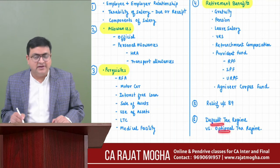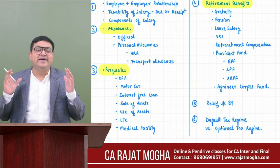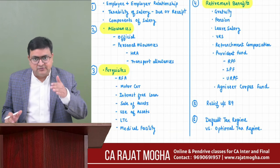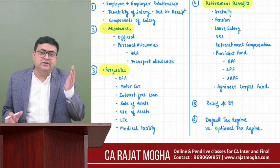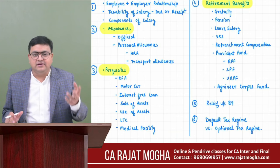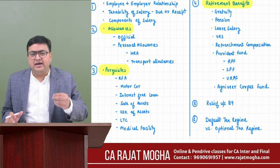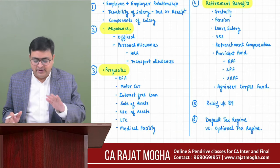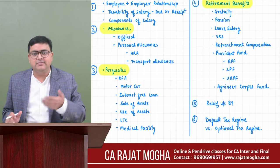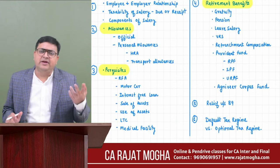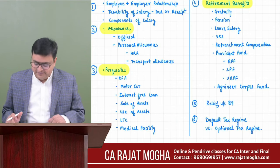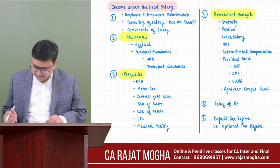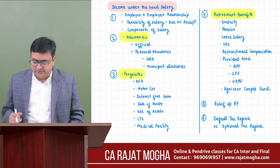You should be well-versed with what items are taxable under the default tax regime and what items are exempt under the default and optional tax regimes, since the examiner can ask you to compute salary under either regime. This covers the full scope of the salary chapter, which we will be covering in today's lecture and the next part.